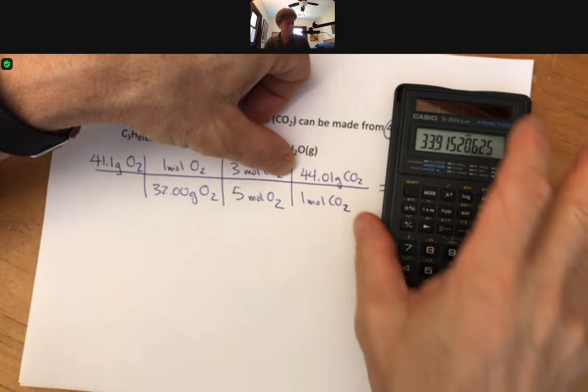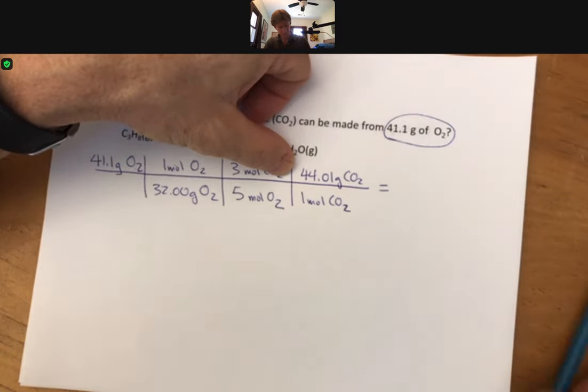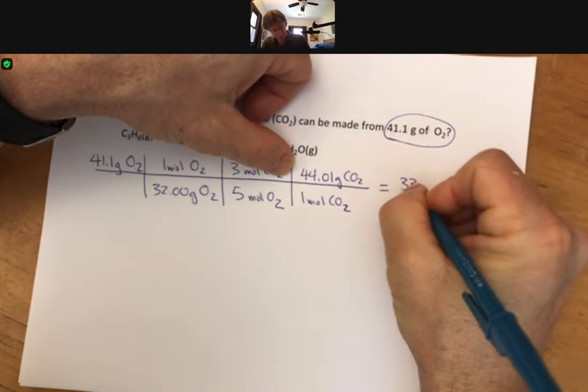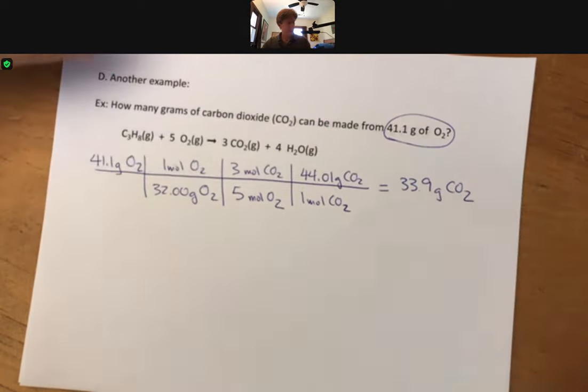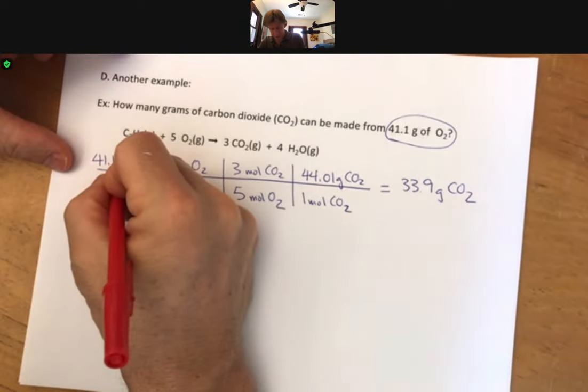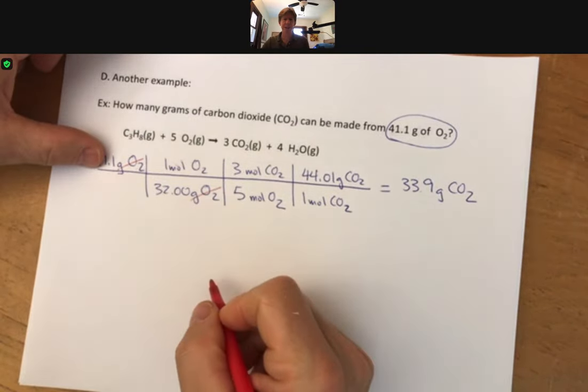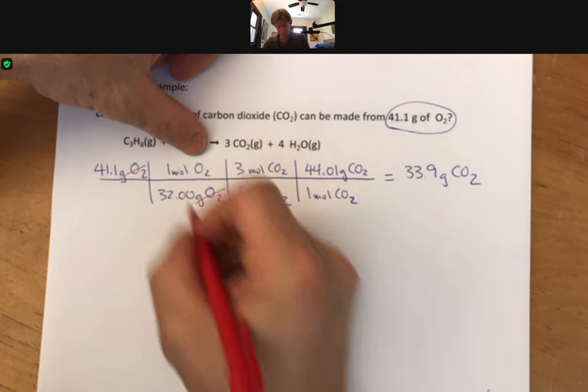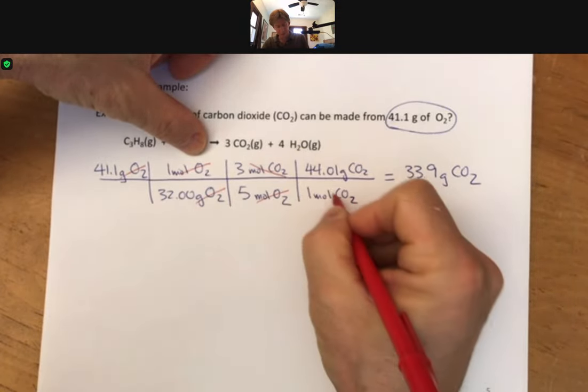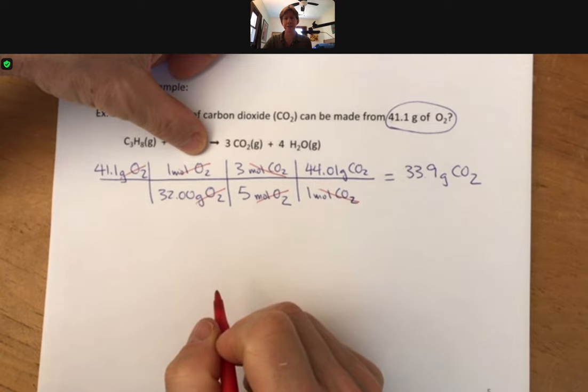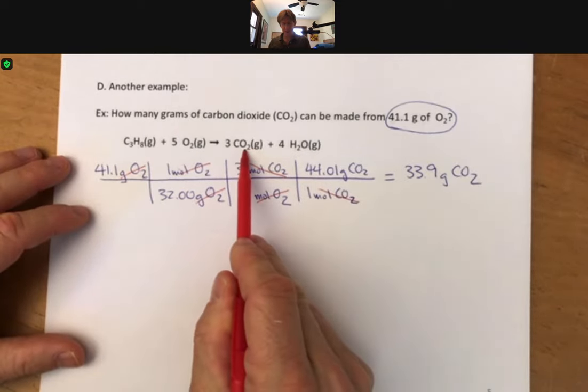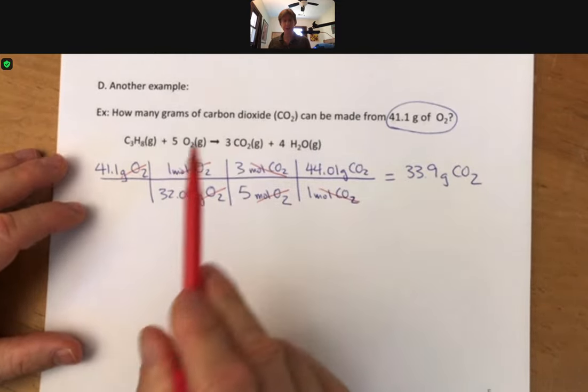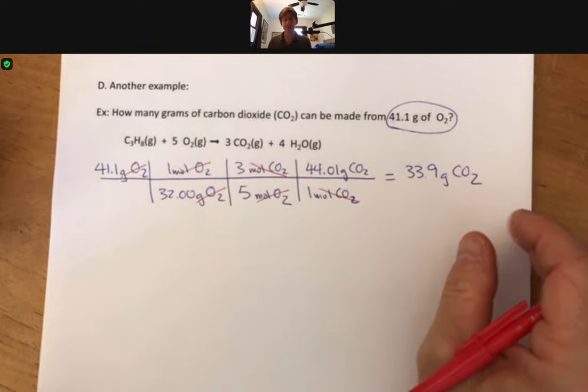Let's go ahead and multiply this out. 41.1 divided by 32.00 times 3 divided by 5 times 44.01, I get 33.9 as my number and my final units here are grams CO2. Double checking everything, I can see that I've got my grams of oxygen canceling out, I've got my moles of oxygen canceling out and my moles of carbon dioxide canceling out so that seems to work pretty well. Now we've done propane to carbon dioxide, we've done oxygen to carbon dioxide. That is typically what you do though not always.